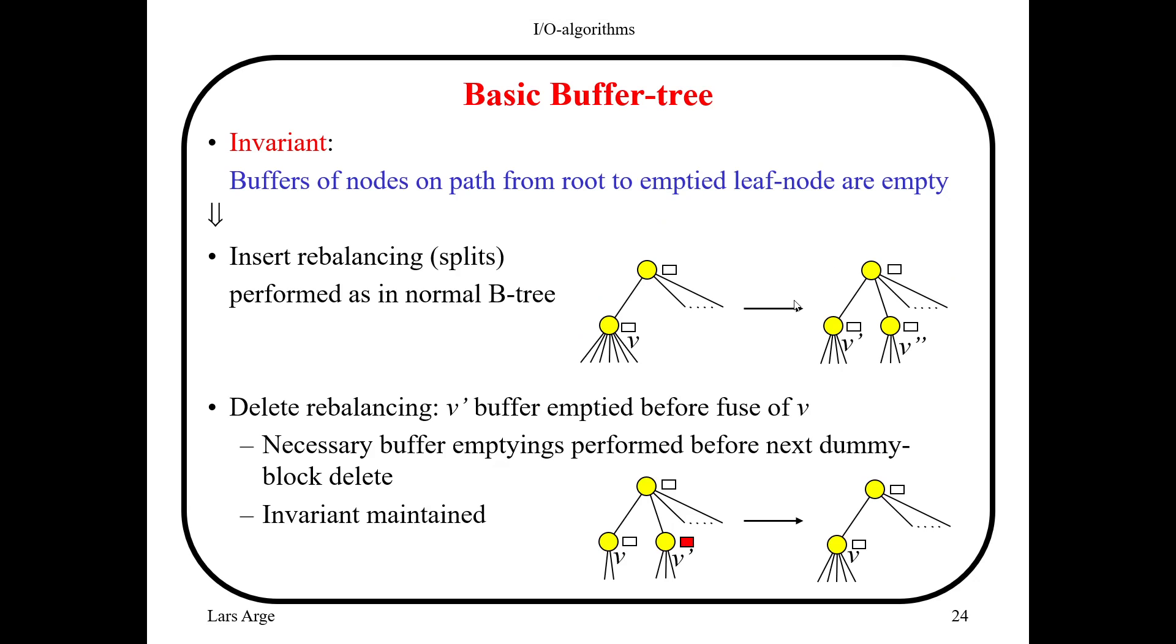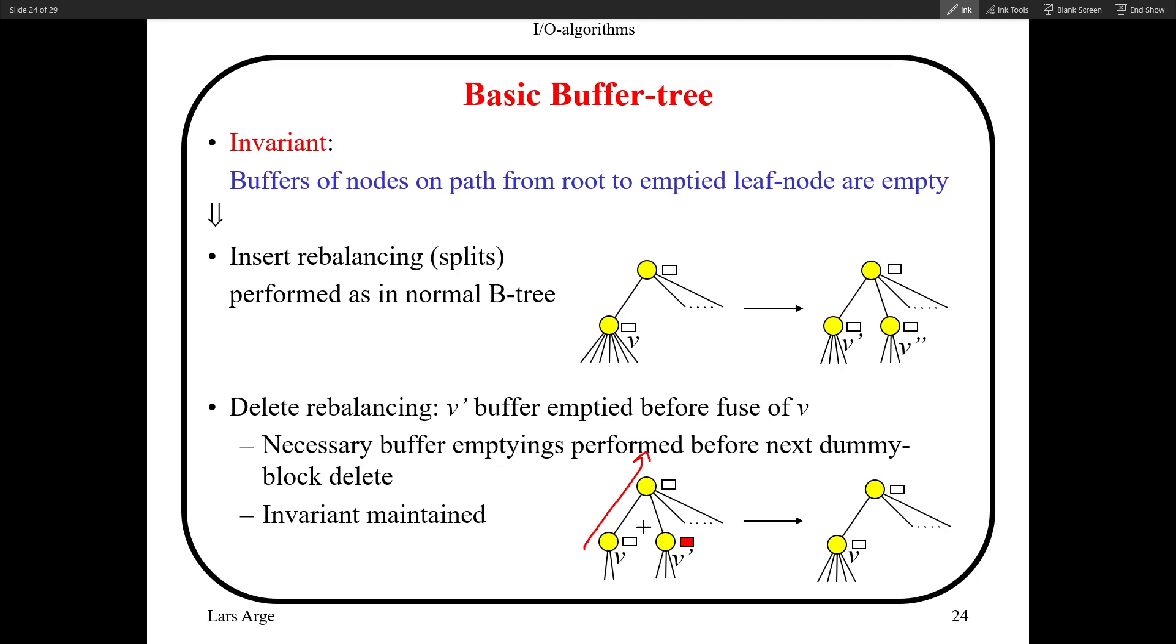But we have a small issue when it comes to deletions. This is because one case of deletion is when the node has too few elements and has to be fused with its parent. We note that the buffer of all the ancestors of V is empty, but the buffer of its sibling could be not empty. In this case, we first empty the buffer of V prime by pushing it to the children before doing this merging. It's going to make the analysis a little bit detailed.